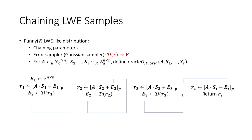This oracle is still a randomized oracle that must sample the noise matrix E1 randomly, so it doesn't obviously help in building a deterministic synthesizer. But the key observation is that even if the initial noise matrix E1 is set to zero, the pseudorandomness of this oracle distribution is still preserved.